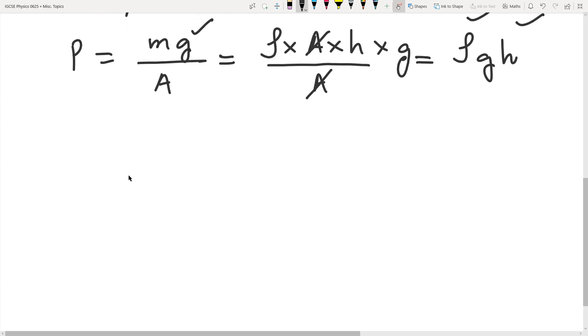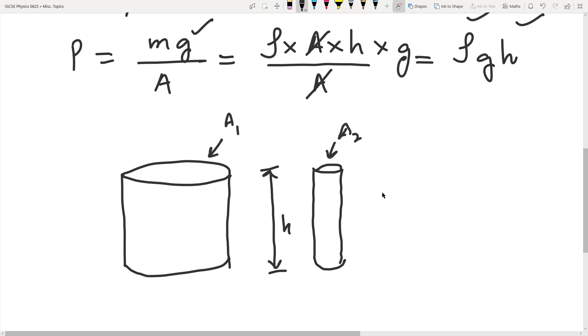If you have two containers, let's say one is this large area cylinder and we have another smaller area cylinder. Considerably, the height is the same for both. This is A1 and this is A2. Is the pressure P1 equal to P2? Yes, it is going to be the same.